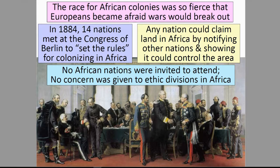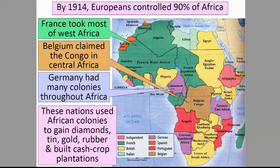Any nation could claim land in Africa by notifying other nations and showing it could control the area. No African nations were invited to attend. No concern was given to ethnic divisions in Africa. By 1914, Europeans controlled 90% of Africa.